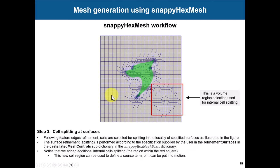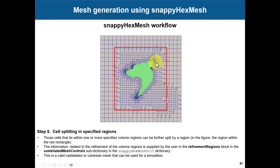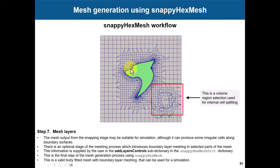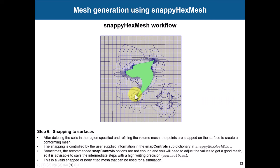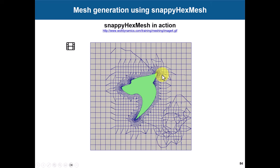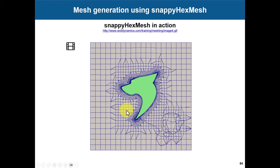All the cell addition is done in the castellation step. When you move to snapping you are not adding any more cells — your cell count may change slightly because you are swapping edges and connectivity, but not significantly. In the boundary layer step you add cells only in the boundary layer without modifying your volume mesh. During snapping, quality is always being checked and may trigger edge swapping, but all cell addition happens in castellation.